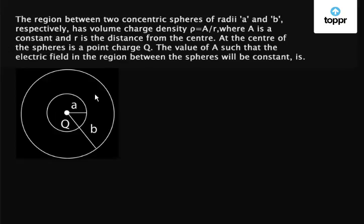The volume between these two spheres is filled with charge density rho equals A upon R, where A is a constant and R is the distance from the sphere. At the center of this sphere, a charge Q is placed.